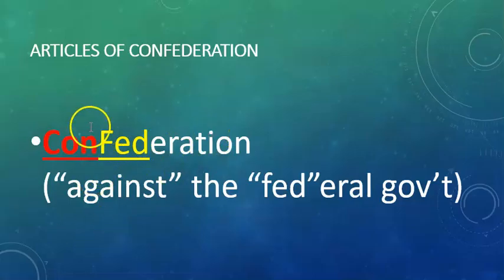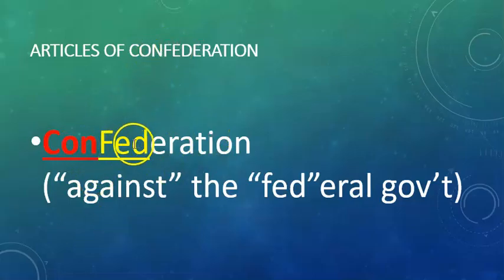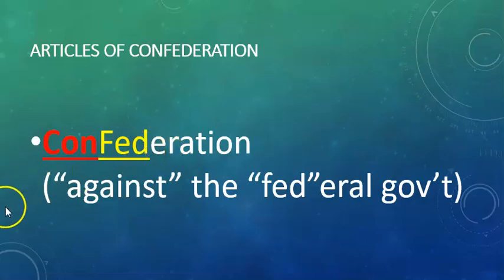And then the Articles of Confederation. Think about the word 'confederation' — 'con' means against, against the federal government. All the power was in the hands of the states.